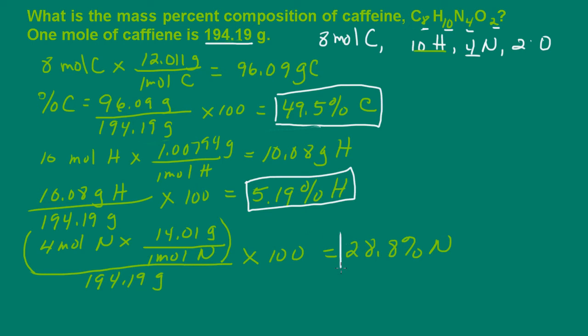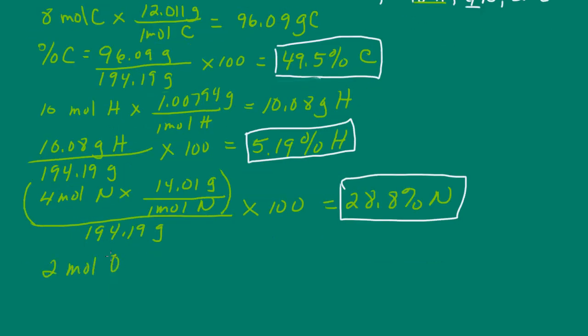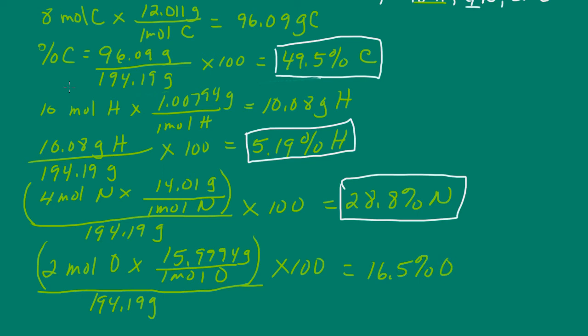Now let's just finish up with the oxygen. We see that we have 2 moles of oxygen. 2 moles of oxygen. And we know that 1 mole of oxygen is 15.9994 grams. And then again, I'm just going to divide this whole quantity here by 194.19 grams. That's the mass of the caffeine. And then multiply everything by 100. And I get 16.5 percent oxygen.